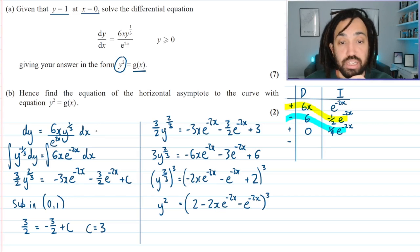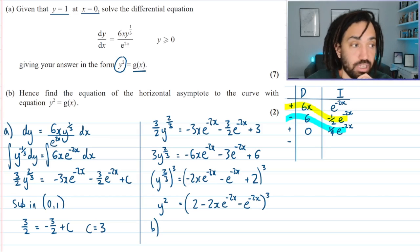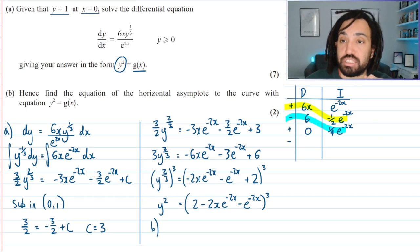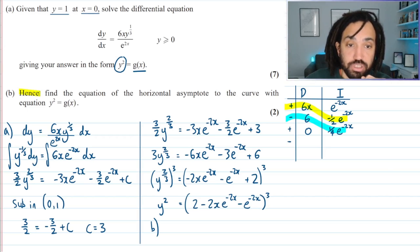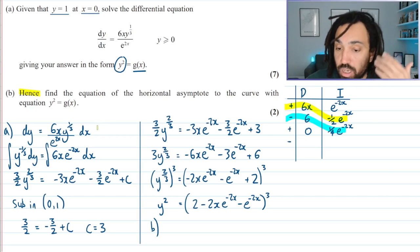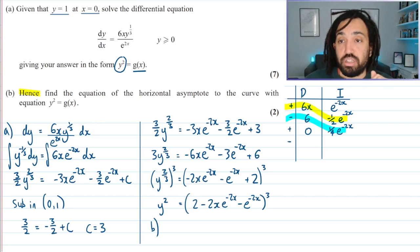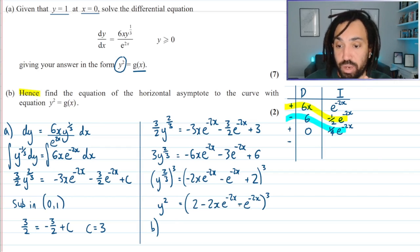Part b. Hence find the equation of the horizontal asymptote to the curve with equation y squared is equal to g of x. Now top tip. Hence means that you have to use the working and the answer in the previous question to get the marks. You can't use a different method. So that means that I'm going to have to use the actual equation to find the horizontal asymptote.